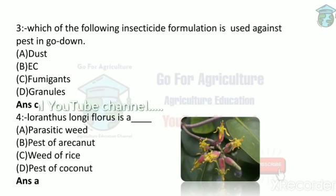Emulsifiable concentrates are oil-based liquids — we don't use liquid in godowns. Granules are applied in soil, so we won't use them in godowns either. The answer is fumigants, which are gaseous products. In a large godown storing agricultural produce, you spray the fumigant — it is gaseous in nature — and you can control the pest easily. So this is the fumigant.